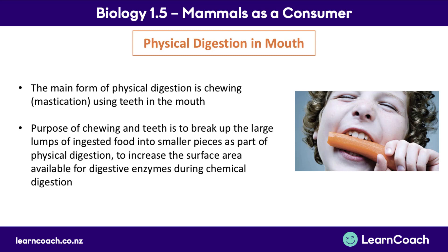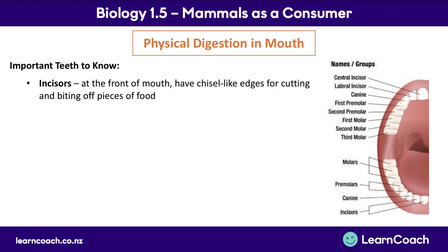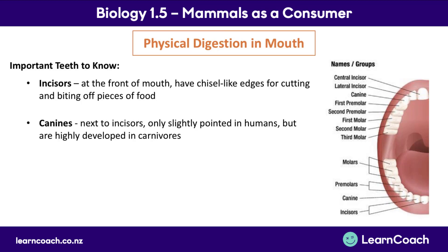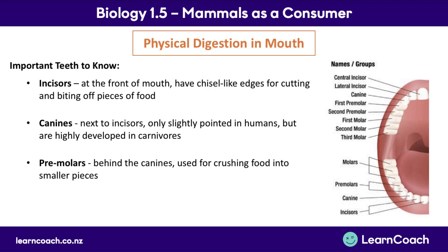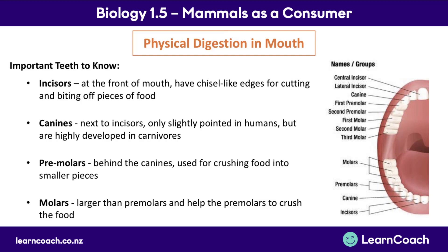Humans and other mammals have special types of teeth adapted to help them eat their specific diets. The incisors are at the front of the mouth and have a chisel-like edge to cut and bite off pieces of food. The canines are next to the incisors and, though only slightly pointed in humans, are highly developed in carnivores for tearing and piercing prey. The premolars are behind the canines — large, flat teeth used for crushing food — and the molars also help the premolars crush food.